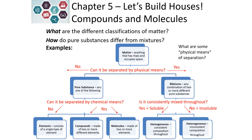What are some physical means of separation? We talked about filtration and evaporation. We can use boiling point. Sometimes you can even use freezing point in order to separate substances if they freeze at different temperatures.